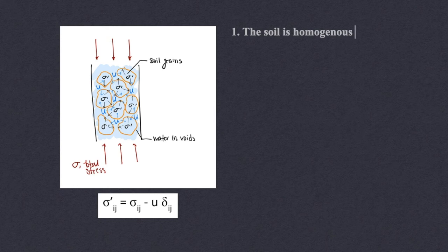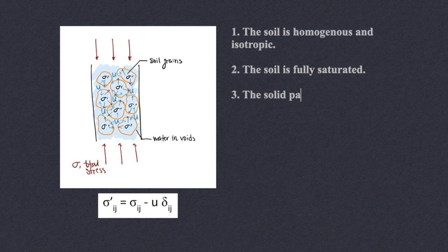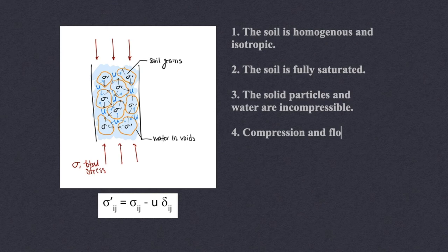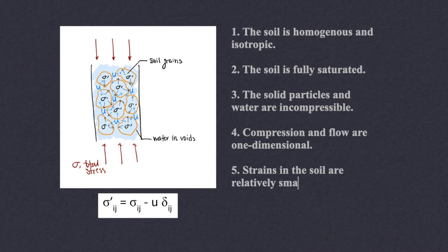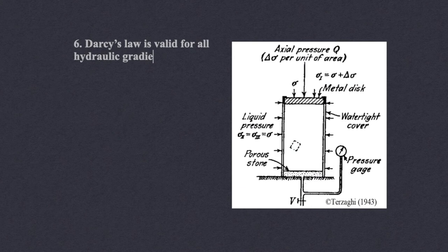There are some assumptions that come with this concept of effective stress. The soil is homogeneous and isotropic. The soil is fully saturated. The solid particles and water are incompressible. Compression and flow are one-dimensional. And the strains in the soil are relatively small.